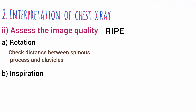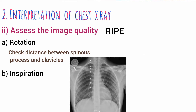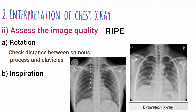Next, assess inspiration. While taking a chest x-ray, the radiographer asks the patient to breathe in and hold their breath, to examine the patient on full inspiration for a better overall image. To consider a chest x-ray adequate in terms of inspiration, you should be able to see 8 to 10 posterior ribs.